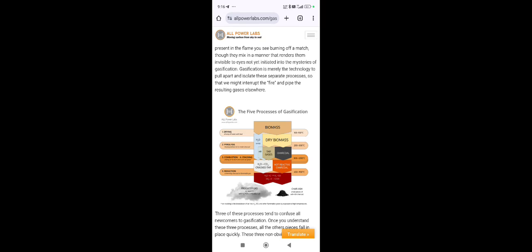Normally the drying process occurs in the temperature range of 100 to 150 degrees Celsius. In the drying zone, we are removing the water content with the help of heat through the biomass.